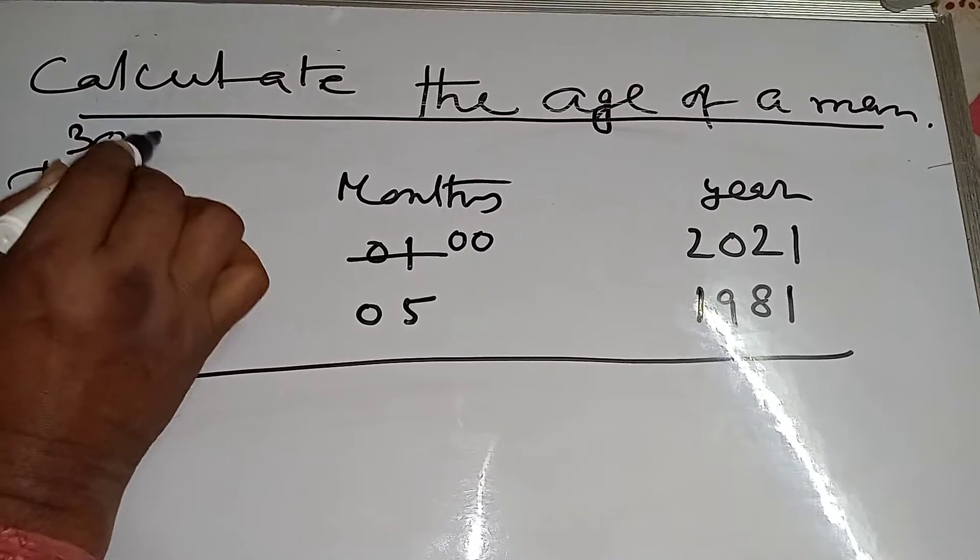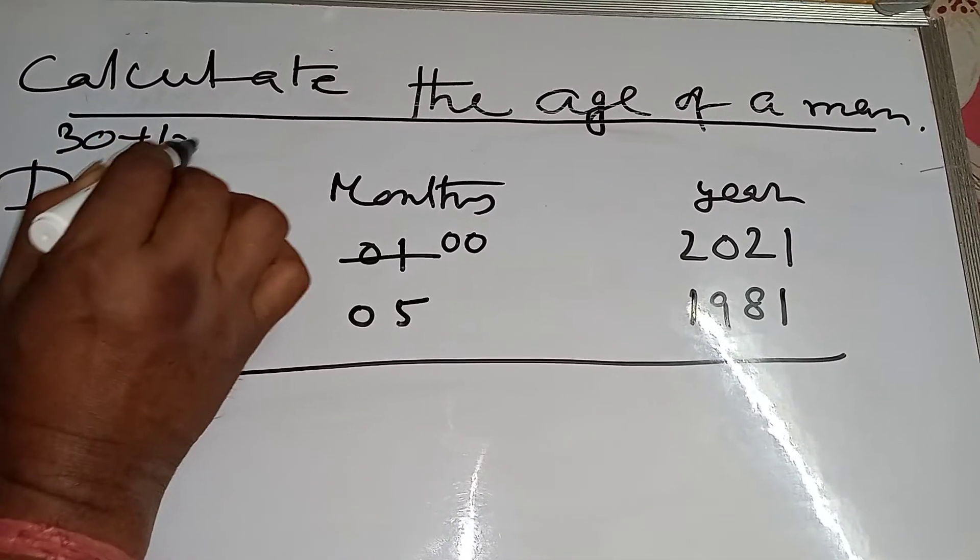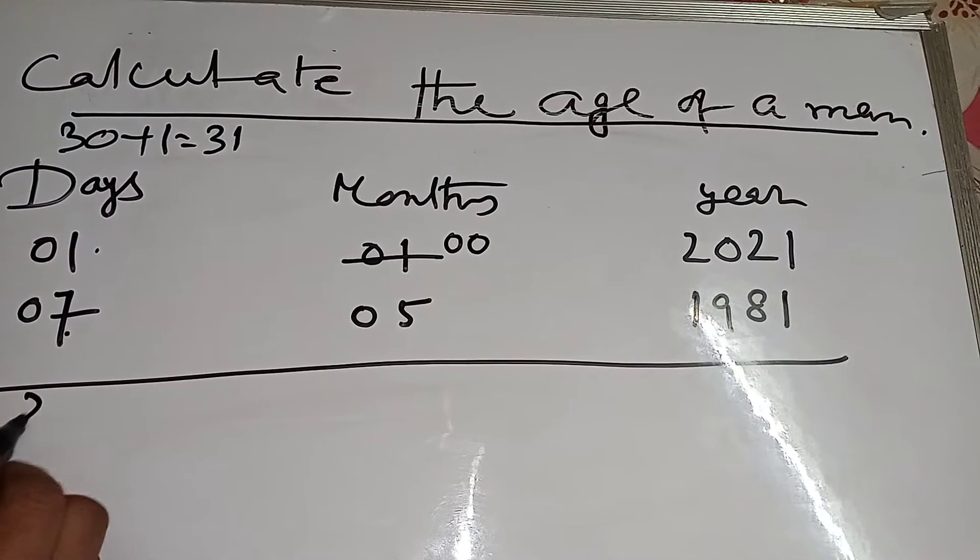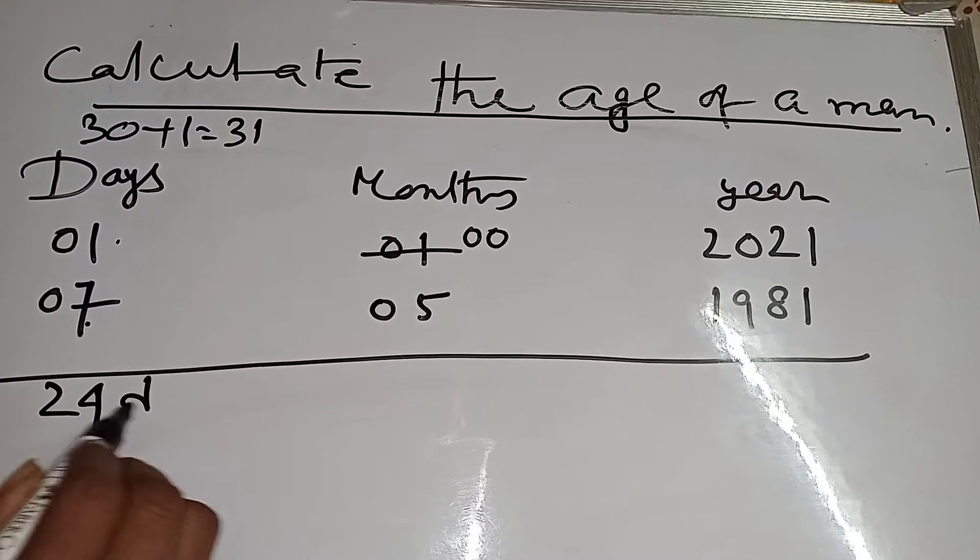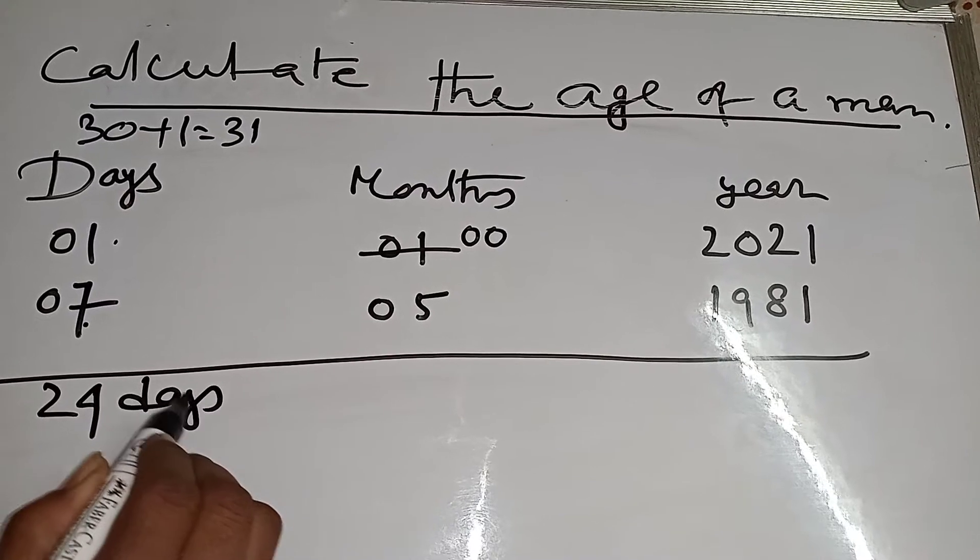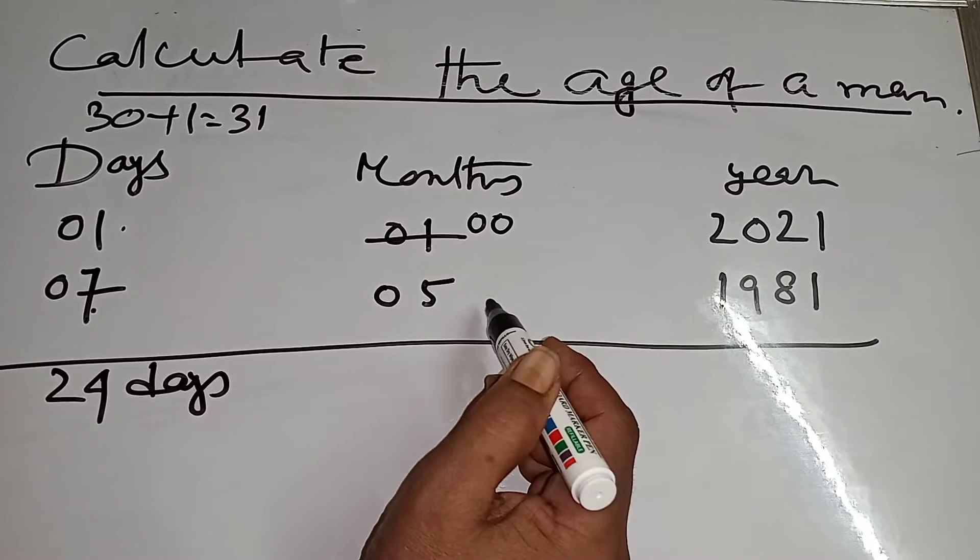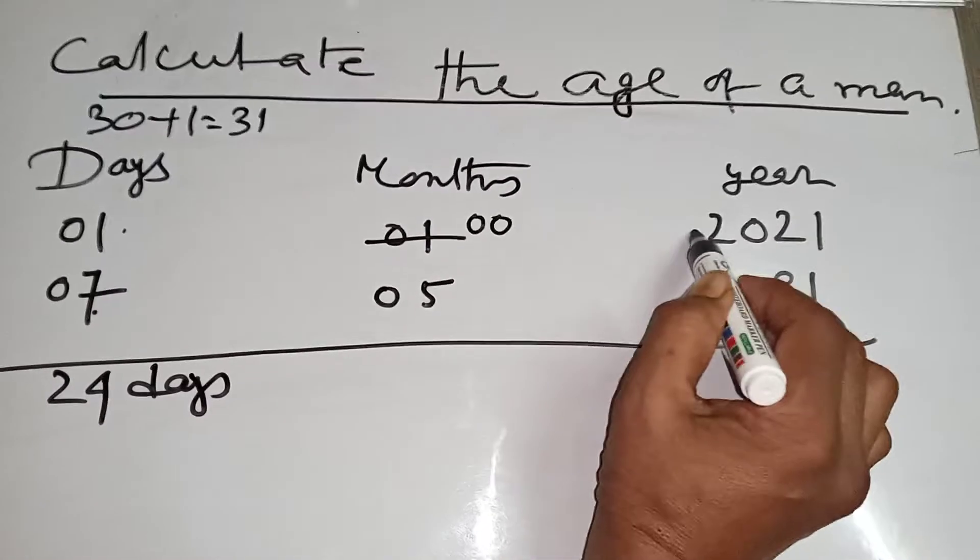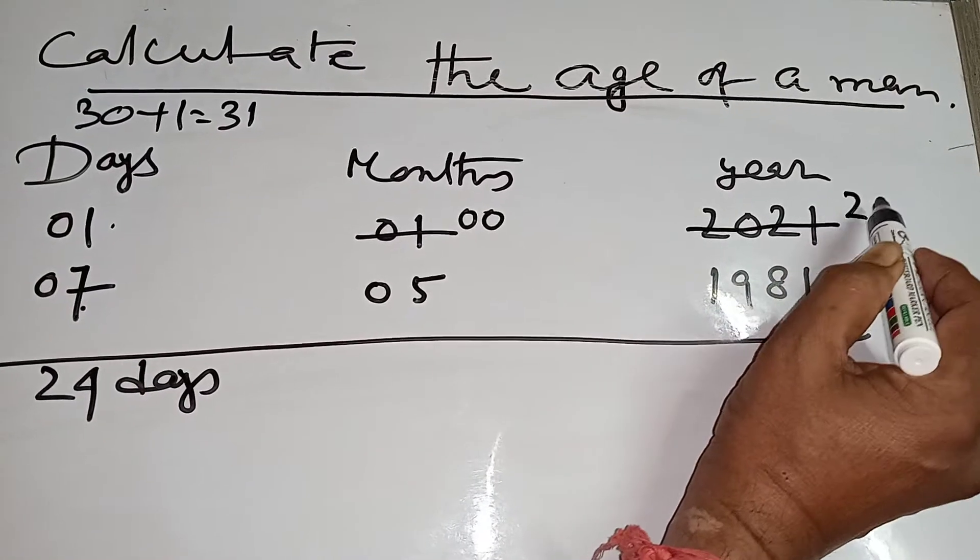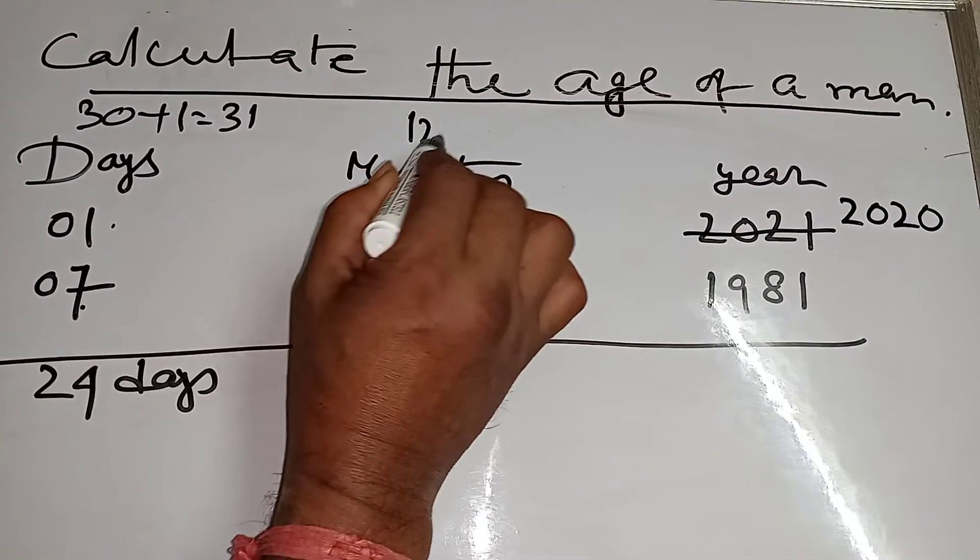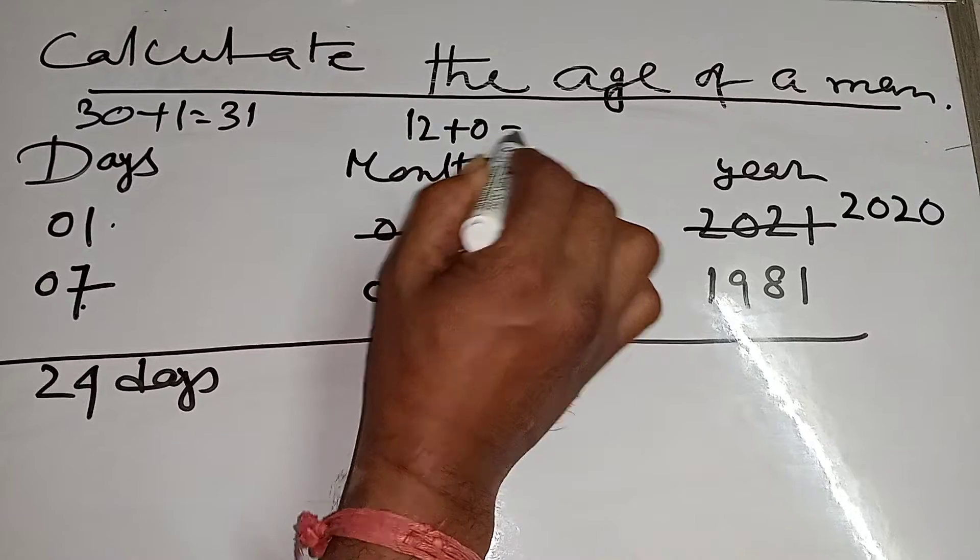30 plus here one, 31 days. 31 minus 7, that means 24 days. But here is 00 month minus 5 month, it can't be. Now I carry one year, here is 12 months plus 0 month.